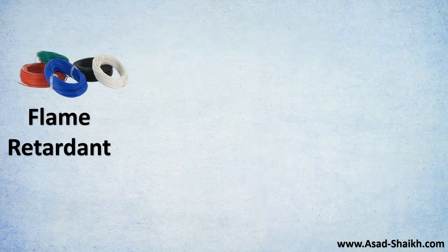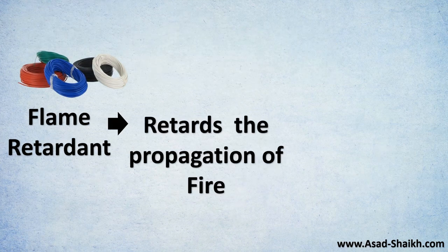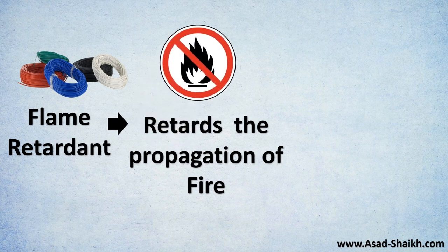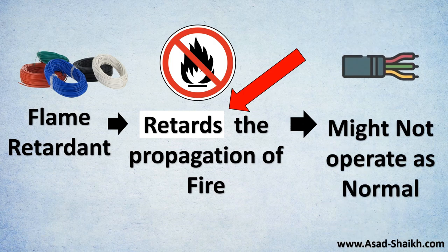Flame retardant cables are basically cables that retard the propagation of fire. The word 'retards' is important and that is where the name comes from — it will try to prevent the propagation of fire, but it might not operate as normal under fire conditions.